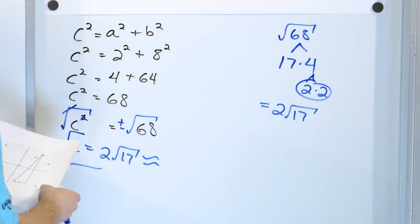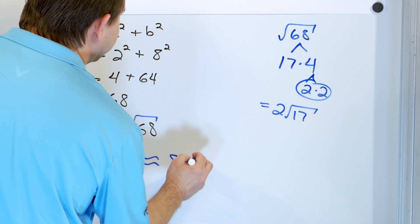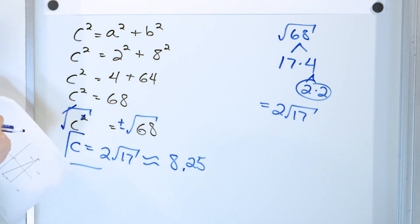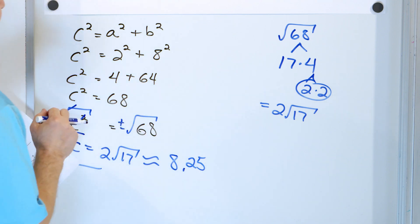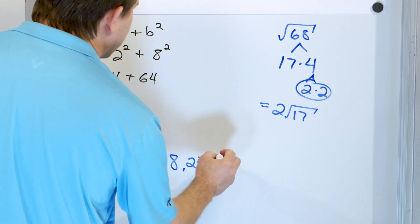Now this also works out to be approximately equal to 8.25 kilometers. So the square root of 68 or 2√17 work out to 8.25 and the units here are kilometers.